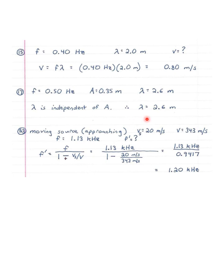The speed of the source, V sub S, is 20 meters per second. We're going to need the speed of sound — we'll take that as 343 meters per second. The frequency F is 1.13 kilohertz and F prime is what we want to solve for. The appropriate formula for a moving source is F prime equals F over 1 minus or plus Vs over V. For an approaching source, we choose the sign that makes the frequency go higher, so in the denominator that's a minus sign. With 1.13 kilohertz over a denominator of 0.9417, we get an answer of 1.20 kilohertz.